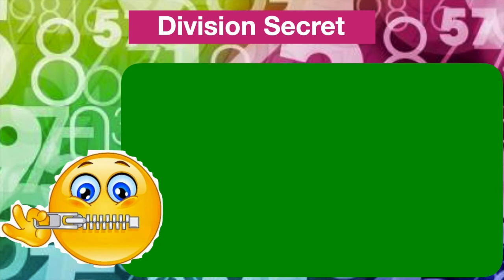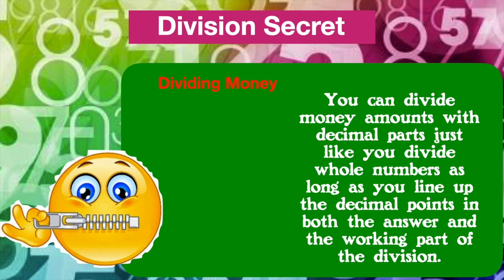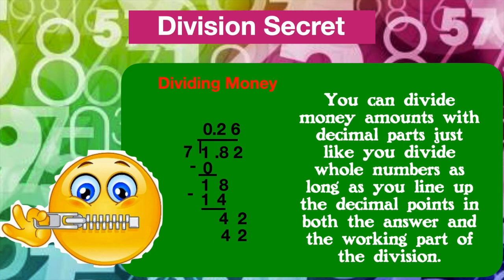Before we go, let me let you in on a little secret. This secret has to do with dividing money. You can divide money amounts with decimal parts just like you divide whole numbers, as long as you line up the decimal points in both the answer and the working part of the division. Take a look: $1.82 divided by 7. Let's divide. $1.82 divided by 7 is equal to 26 cents.